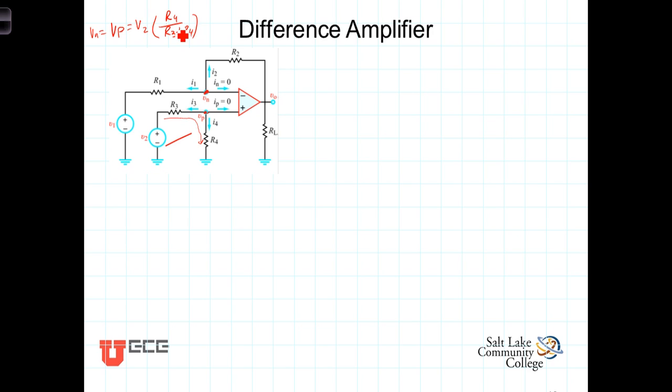KCL at the node. We've got the current leaving the node going this way. That's going to be V sub n minus V1 divided by R1, plus the current going this way through the feedback loop is V sub n minus V out divided by R2. There's no current going into the inverting terminal so we only have those two terms that must add to give us 0.